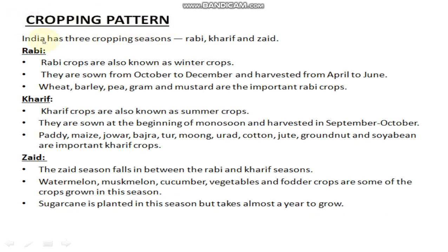Now the cropping pattern — there are three agricultural seasons in India. First, Rabi crops, also known as winter crops. They are sown from October to December and harvested from April to June. Examples include wheat, barley, pea, gram, and mustard. You can currently observe Rabi crops being harvested.